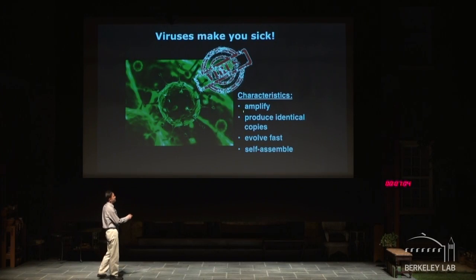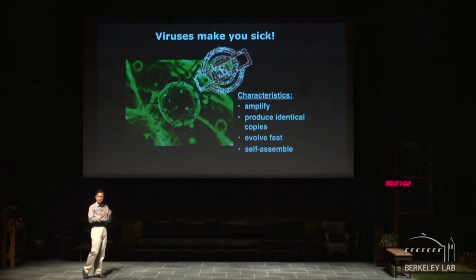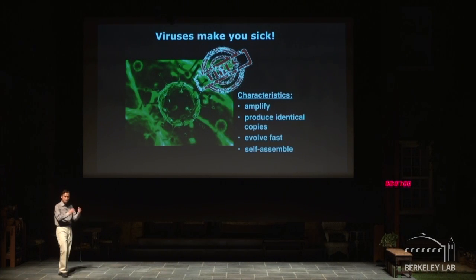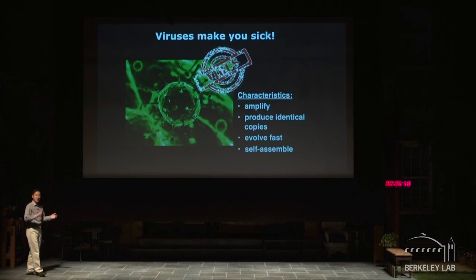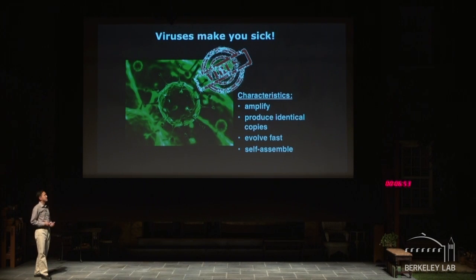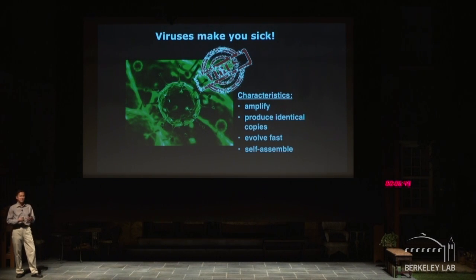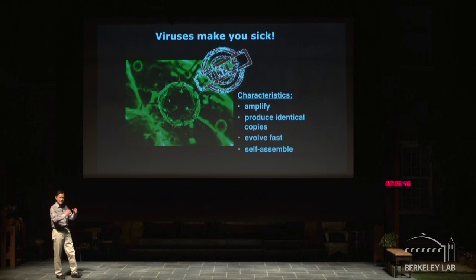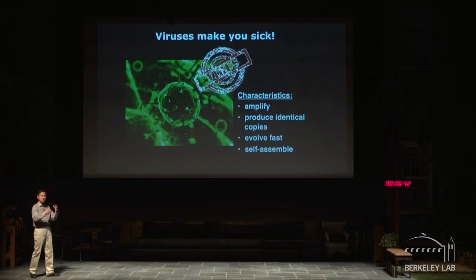If we have one virus and mix it with a host cell, we can easily end up with trillions or zillions of viruses. At the same time, they produce exactly identical copies of what we first designed. Depending on how we make these copies, we can also induce mutation very quickly, evolving these materials rapidly to design new properties. And most of them have exactly the same shape, so we can easily put them together in a self-assembled manner to design new types of devices.